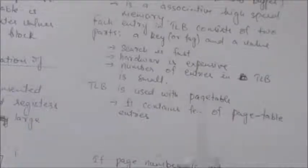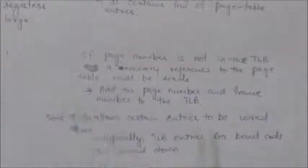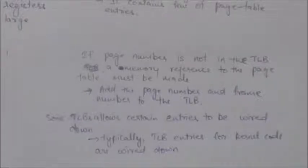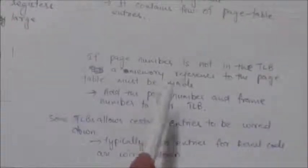If the page number is not found in the TLB, a memory reference to the page table must be made to obtain the frame number. In addition, this page number and frame number are added to the TLB so they will be found quickly on the next reference.